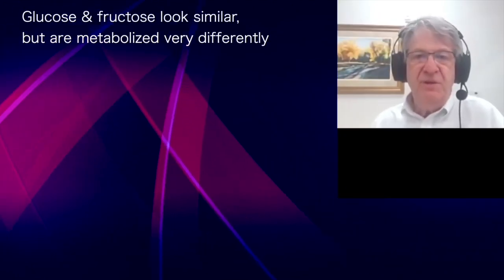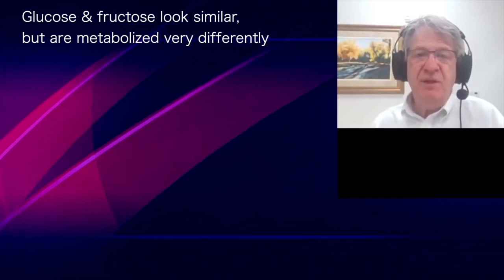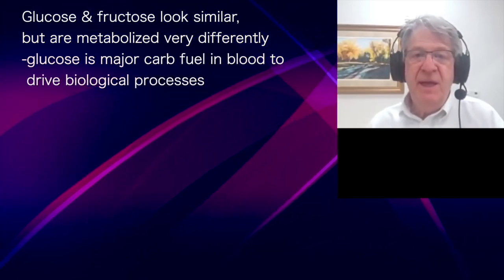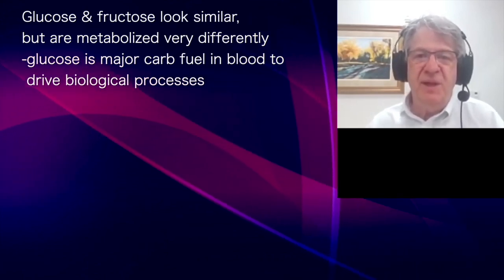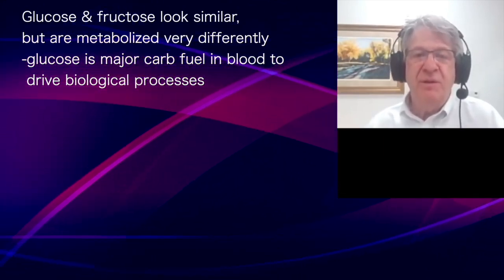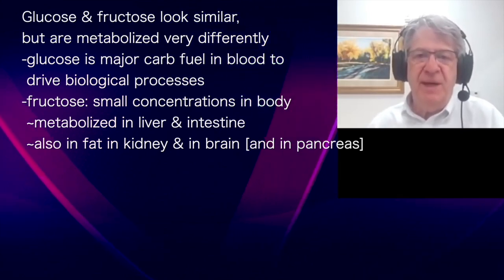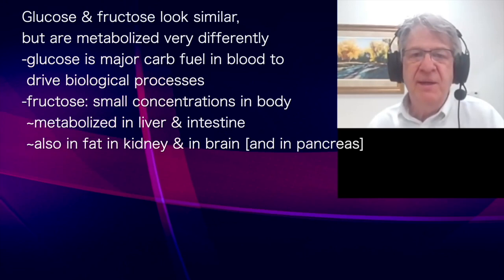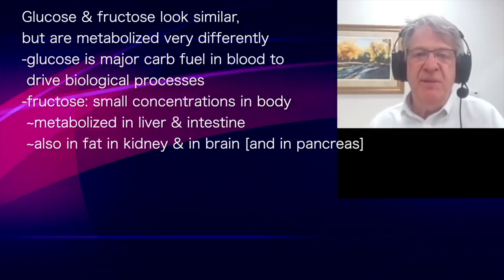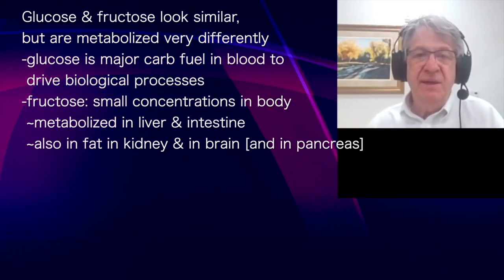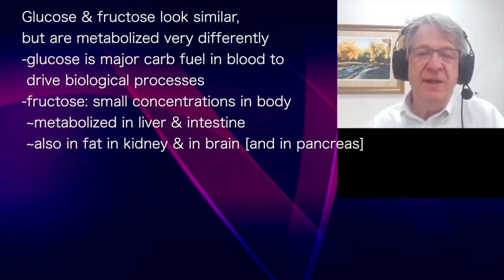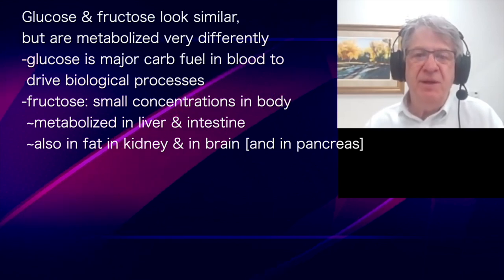Of the two sugars, glucose and fructose look very similar in structure and chemistry, but they are very different in the way they are metabolized. Glucose is the major fuel in our blood that drives all biological processes — the major carbohydrate fuel. Fructose is not present very much in the body, maybe one-hundredth or so of what glucose is. When you eat fructose, it is metabolized mainly in the liver and the intestine, but can also be metabolized in other sites like fat, the kidney, the brain, and even in the islets of the pancreas where insulin is made.